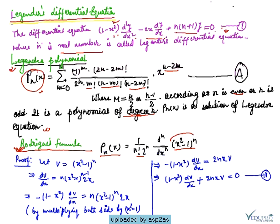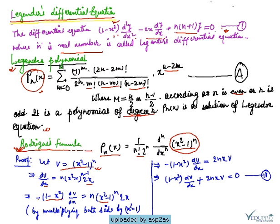To prove this, let Pn(x) equal v. So we have v = (x²-1)^n. Now differentiating once with respect to x: dv/dx = n(x²-1)^(n-1) · 2x. This gives us (1-x²) dv/dx = n(x²-1)^(n-1) · 2x · (−1) ... leading to (1-x²) dv/dx = 2nx times (x²-1)^n.